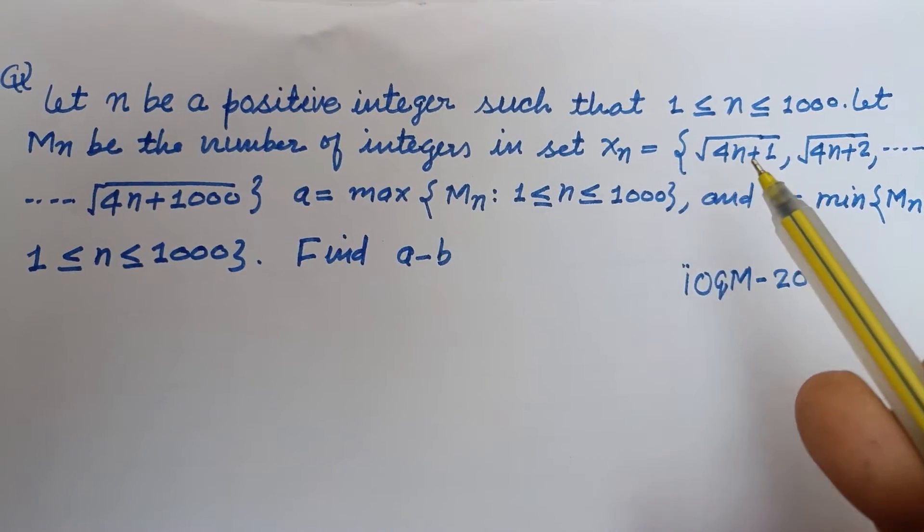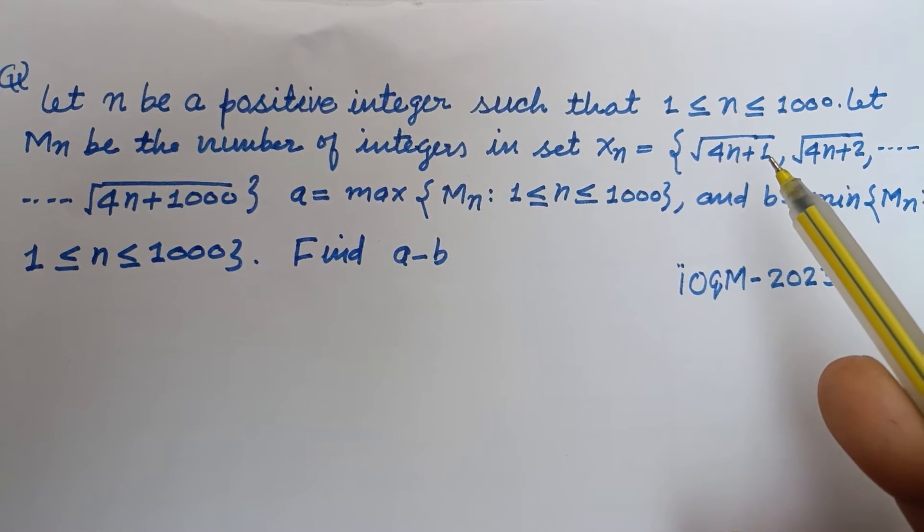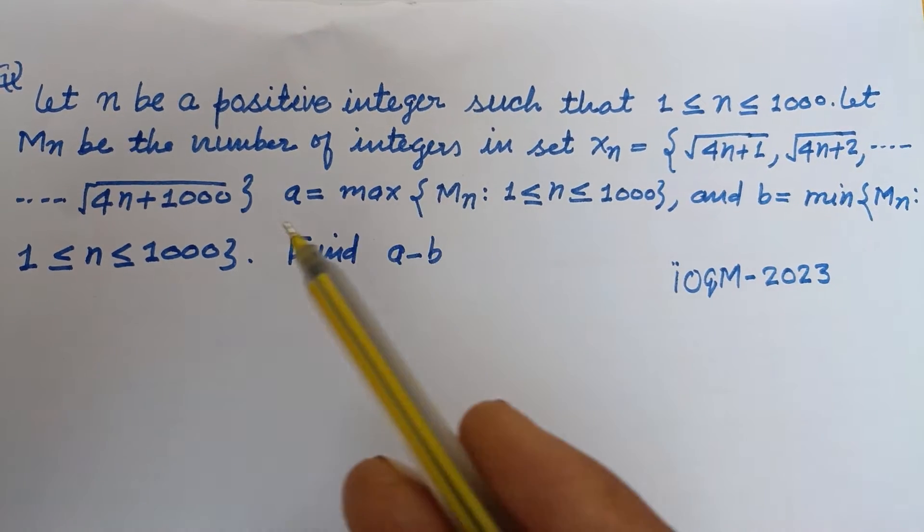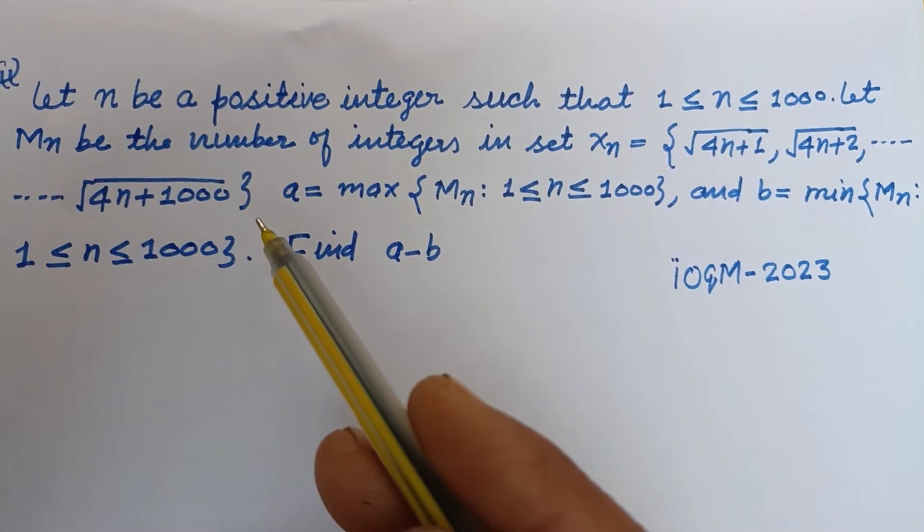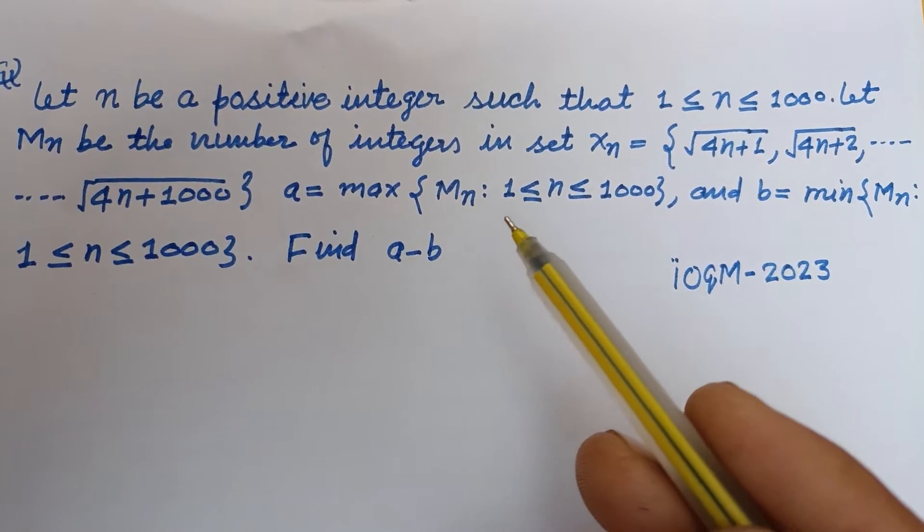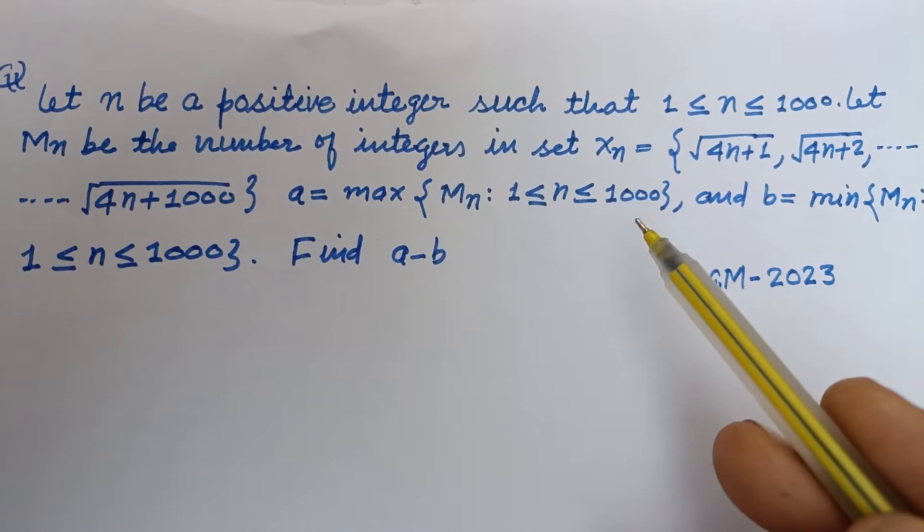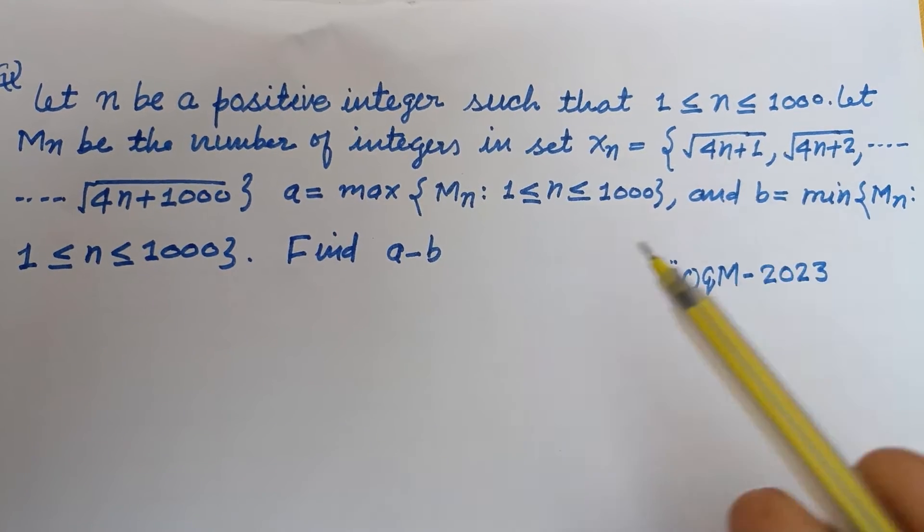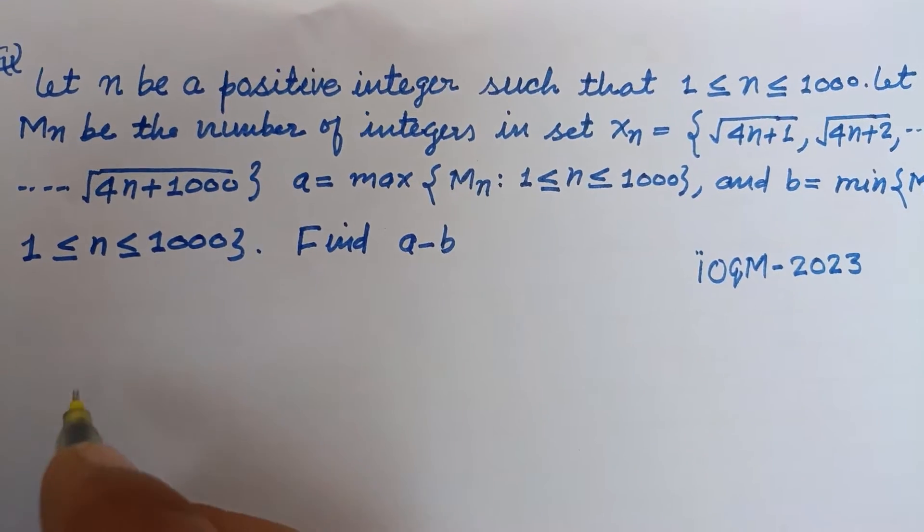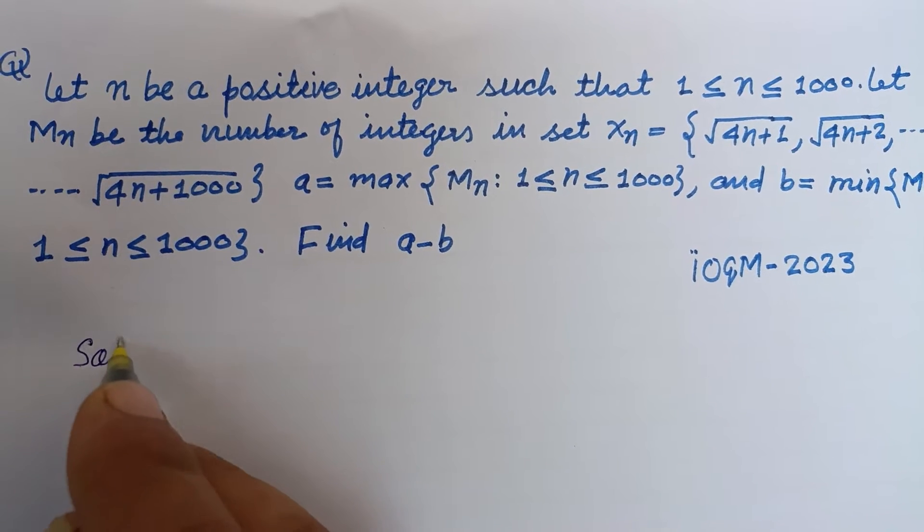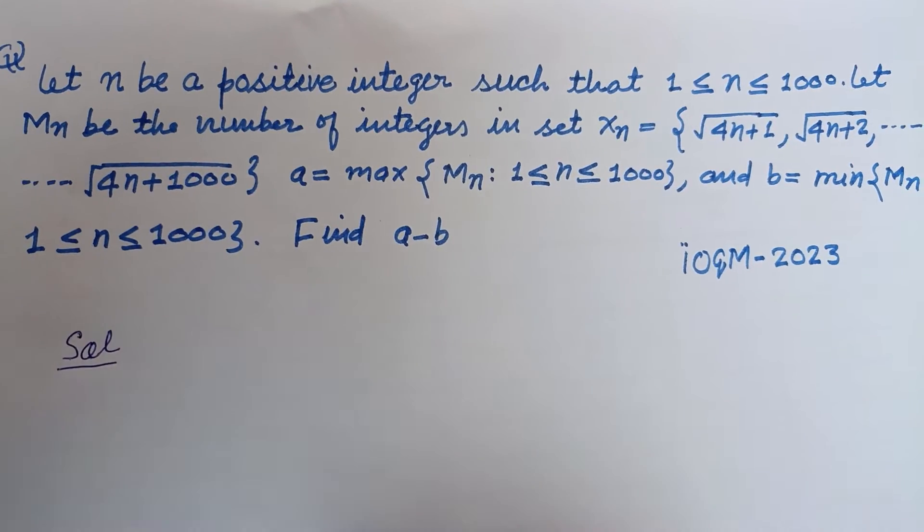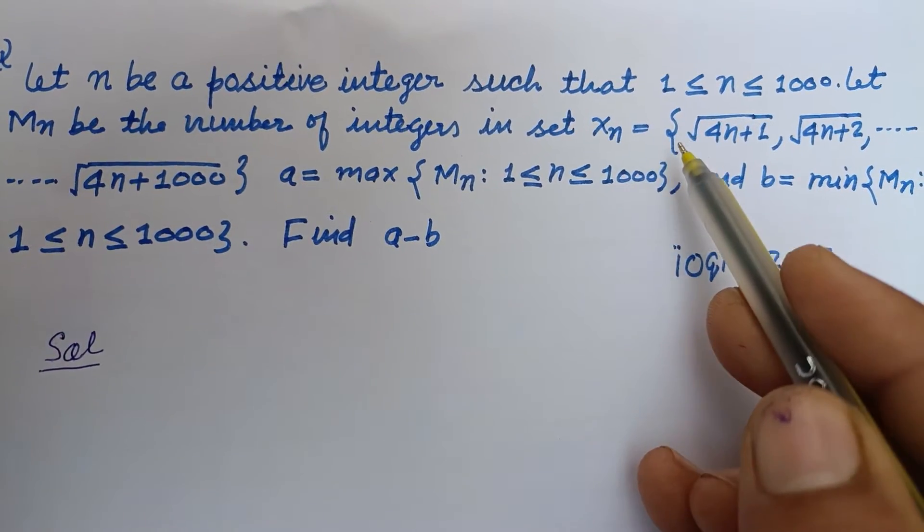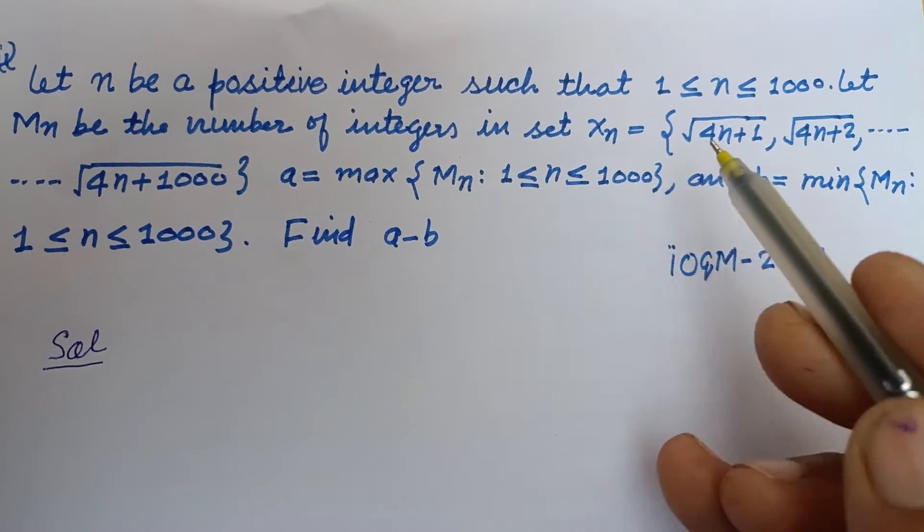Xn equals {√(4n+1), √(4n+2), ..., √(4n+1000)}. a = max{Mn: 1≤n≤1000} and b = min{Mn: 1≤n≤1000}. Find a-b. So students, the question is asking for the number of integers which is maximum in this set and minimum in this set that are perfect squares.